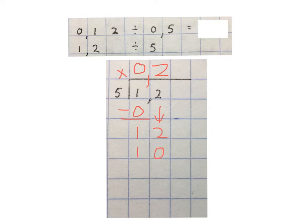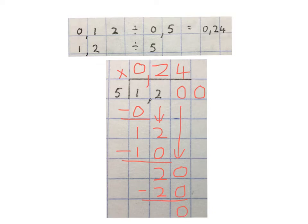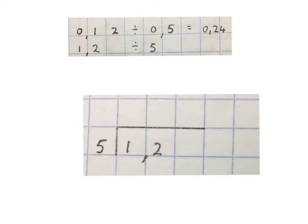Then we minus the 10 from the 12, that gives us a 2. There are no more numbers to bring down, so we add in zeros as many as we want. Now we have a 0 to bring down, giving us 20. We say 5 goes into 20: 4 times. 4 times 5 is 20, which we minus from that 20, giving us 0. The moment we have a 0 remainder, we may stop. Our final answer is 0.24.